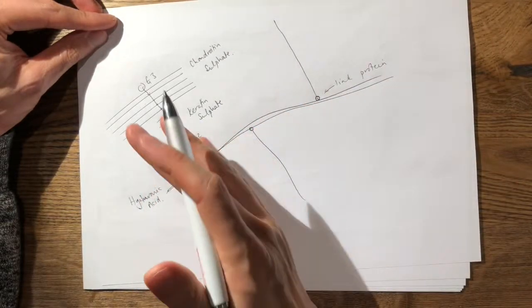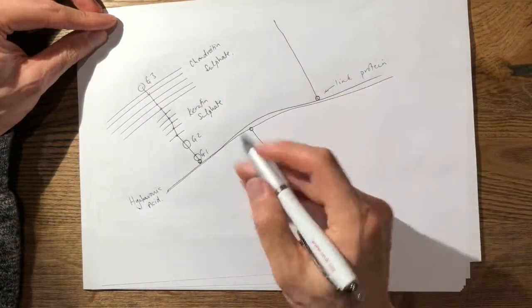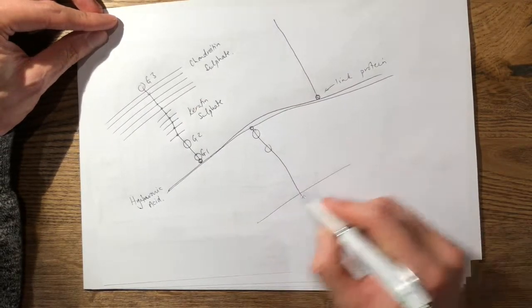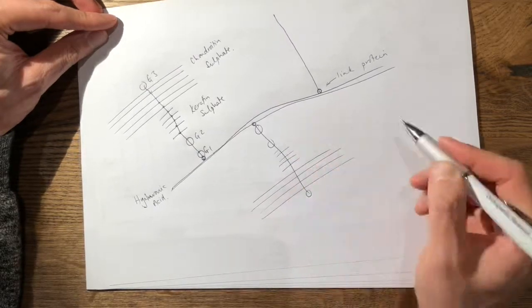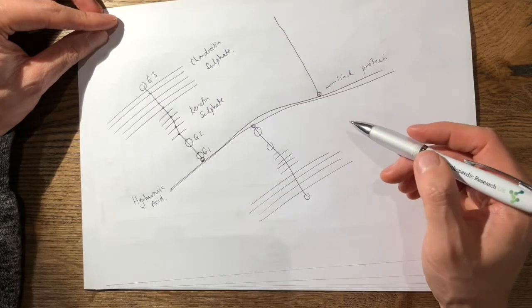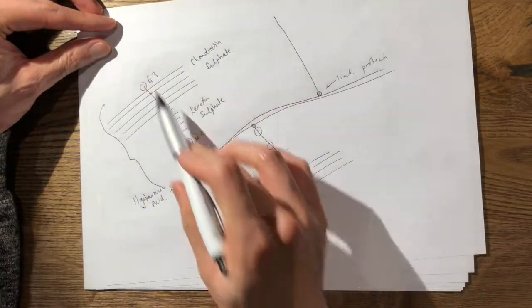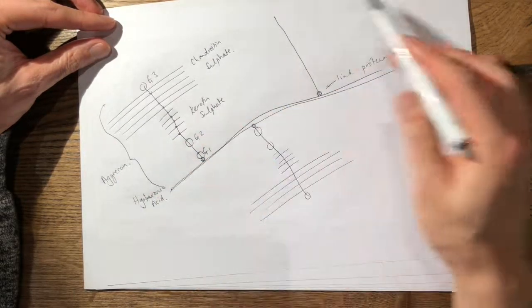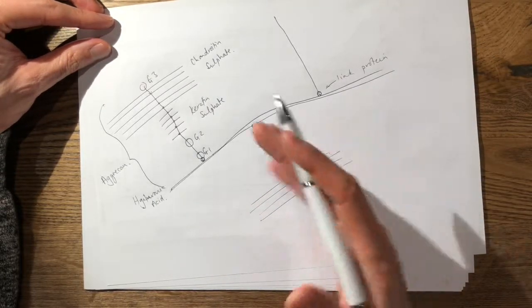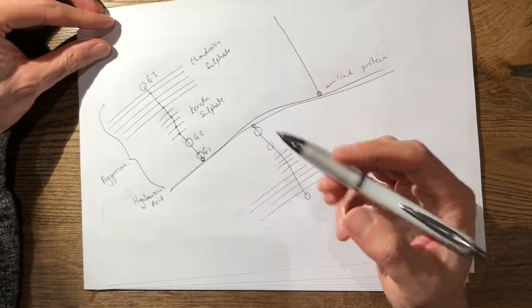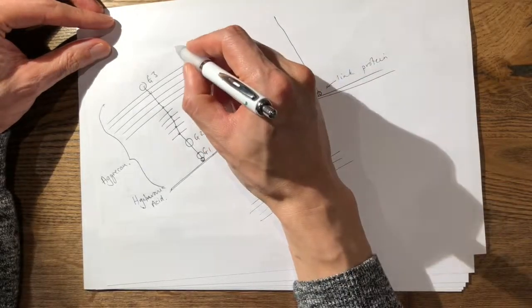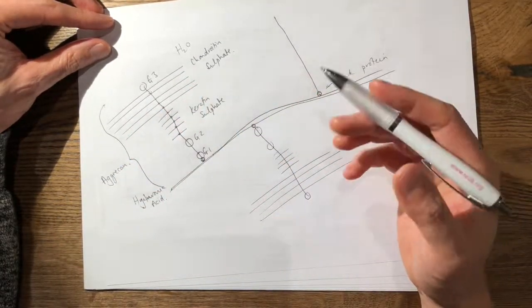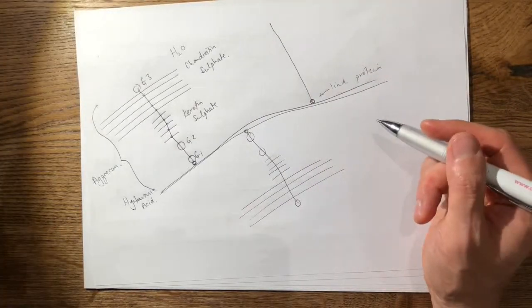So here you have this along the whole course of the proteoglycan molecule. So you have your G1, G2 and G3. And similarly, you have your chondroitin here, keratin there, and the same here as well. And this whole part here is called an aggrecan. And this whole proteoglycan molecule provides cartilage its compressive strength. And it tries to do this by trapping water. The aggrecan molecules try to trap water to increase its compressive strength.